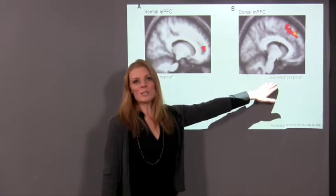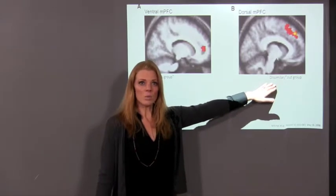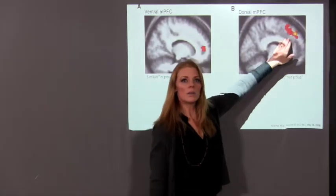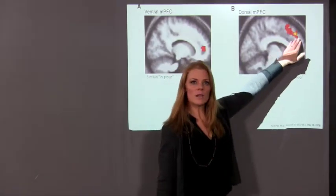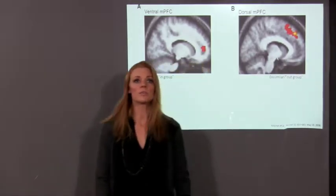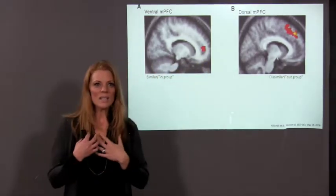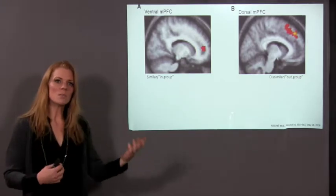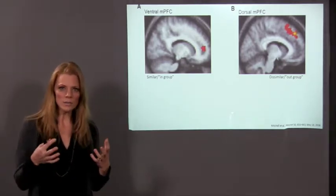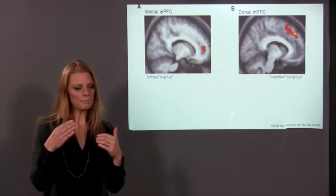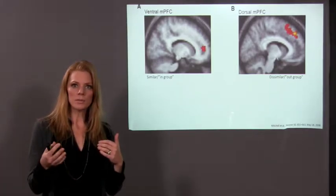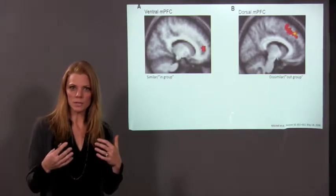The more dissimilar or 'other' we see someone, the more we process information about making decisions about that person with the dorsal aspects of our prefrontal cortex. We don't see them as self — we see them as non-self. And so it's a much more cognitive, much more deliberative kind of problem solving.